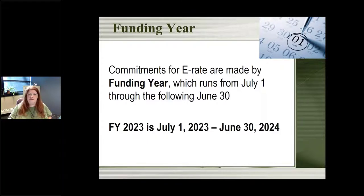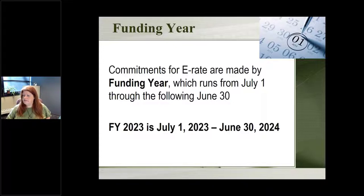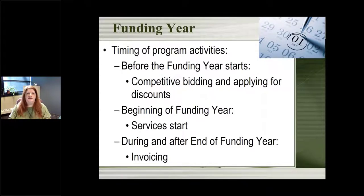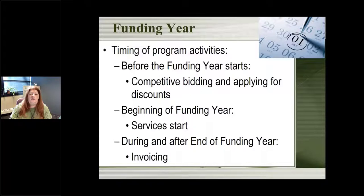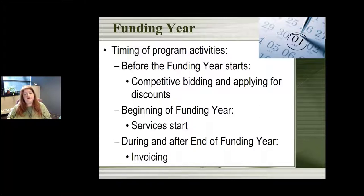You can only receive E-rate discounts on purchases you're making in the future — there's nothing for things you've done in the past. If you've already gone through a year, you can't go back and say you want a discount on something you already bought. It's a thinking-to-the-future type process. Before the funding year starts, you apply saying you want to receive E-rate for the upcoming year, go through a competitive bidding process, and pick your service provider. At July 1st your services start, and then during and after the funding year you have what's called invoicing — that's when you receive your actual discounts.